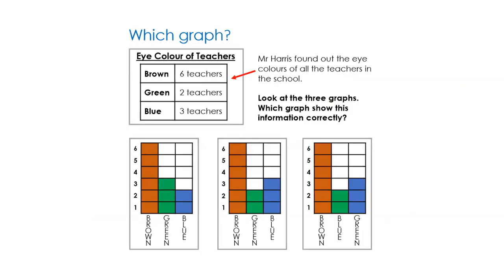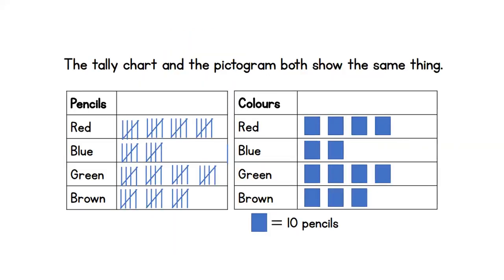Our next challenge question: we have a graph of eye colours of teachers in school. Mr. Harris found out the teachers' eye colour. You need to look at three graphs and decide which one shows the information correctly. And finally, our last challenge question: the tally chart and the pictogram both show the same thing — do you agree or disagree? Count the tallies, check the key, and count the pictogram. I'll post these on the class story and you can have a go at those at home. If you have any questions about maths today, pop us a message on Dojo and we will try and help you. Good luck and have a good day.